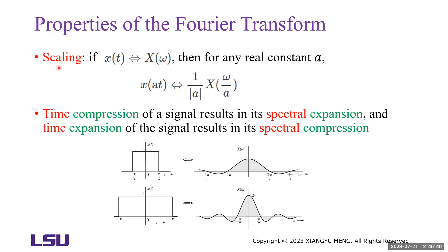The next property is the scaling property. If x(t) and X(omega) are a Fourier transform pair, then for any real constant A, the Fourier transform of x(at) is 1 over the absolute value of A times X(omega/A). In the time domain, x(at) represents the function x(t) compressed in time by a factor of A when A is greater than 1. Similarly, X(omega/A) represents X(omega) expanded in frequency by the same factor A.